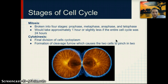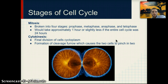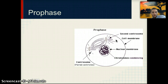Mitosis is broken down into four specific stages: prophase, metaphase, anaphase, and telophase. If the cell's life cycle were about 24 hours, only about one hour of those would be spent actually dividing through mitosis. Cytokinesis follows mitosis — this is when the cell actually splits and becomes two separate cells. Telophase is the last stage of mitosis, getting the cell ready to divide, and cytokinesis completes that process.